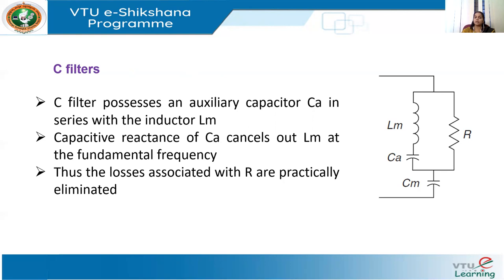The C filter has two capacitances: CM and CA, the auxiliary capacitance. The auxiliary capacitance CA is sized so that its capacitive reactance cancels with the inductance LM at the fundamental frequency, providing a low impedance path at fundamental frequency. This means at fundamental frequency, the reactances of LM and CA cancel each other, effectively bypassing the resistance R, which reduces fundamental frequency losses. So at fundamental frequency, the losses associated with R are practically eliminated by tuning the values of LM and CA.